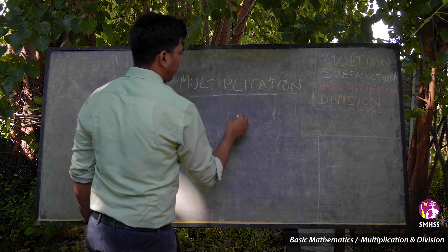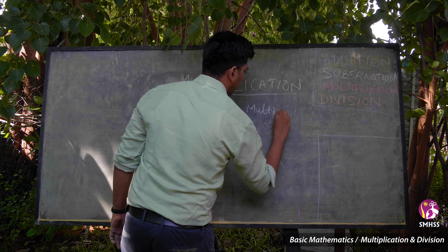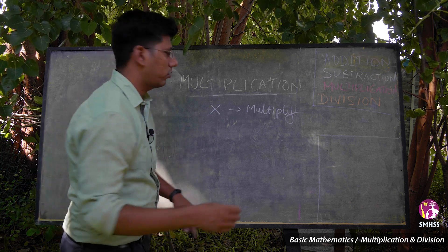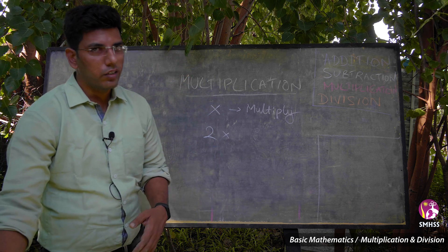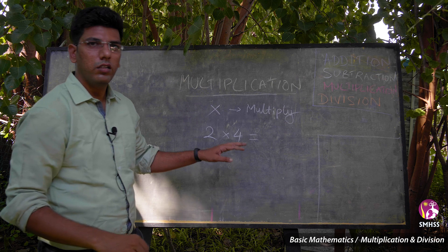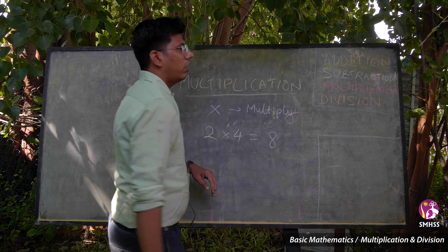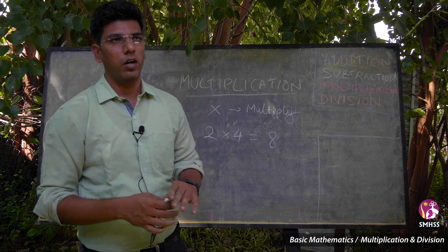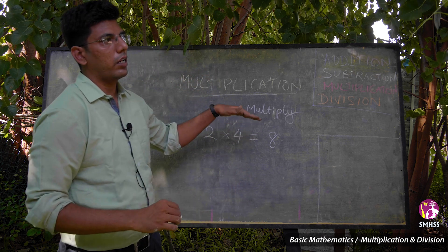The multiply symbol — this 'x' symbol is called multiply. How many ladies fingers do you have to fill in a plate? 2. We use this symbol multiply. How many plates do you need to fill? Suppose you have filled 4 plates. So, 2 into 4 equal to — this is an equation. We use equal sign. 2 fours are 8. This is how a multiplication works.